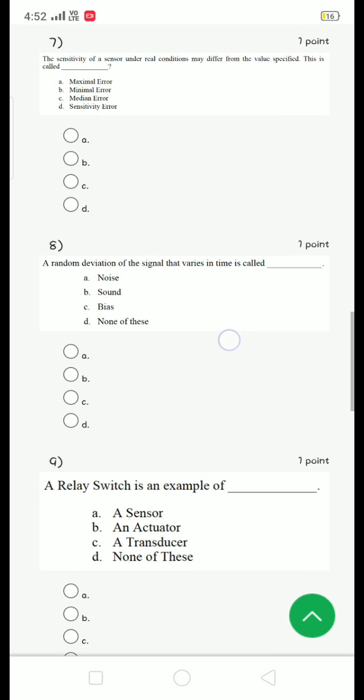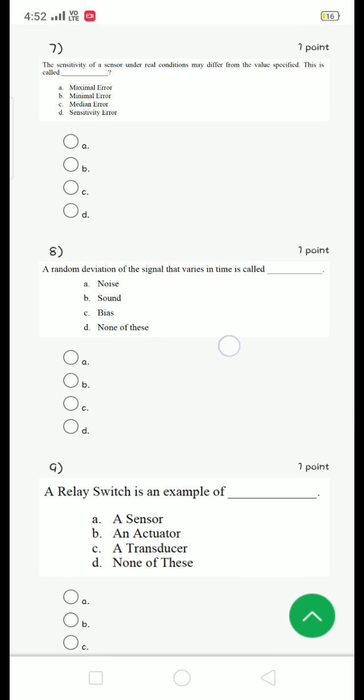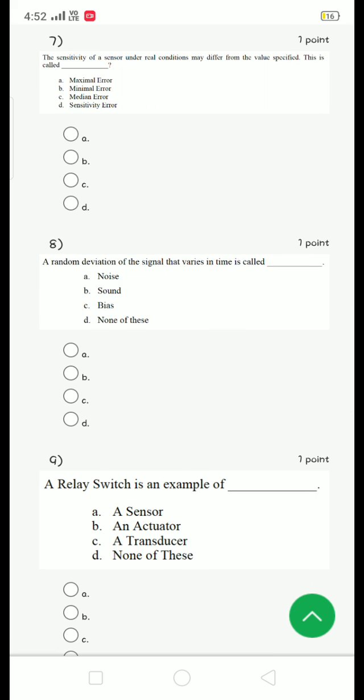The sensitivity of a sensor under real conditions may differ from the value specified. This is called option D, sensitivity error.